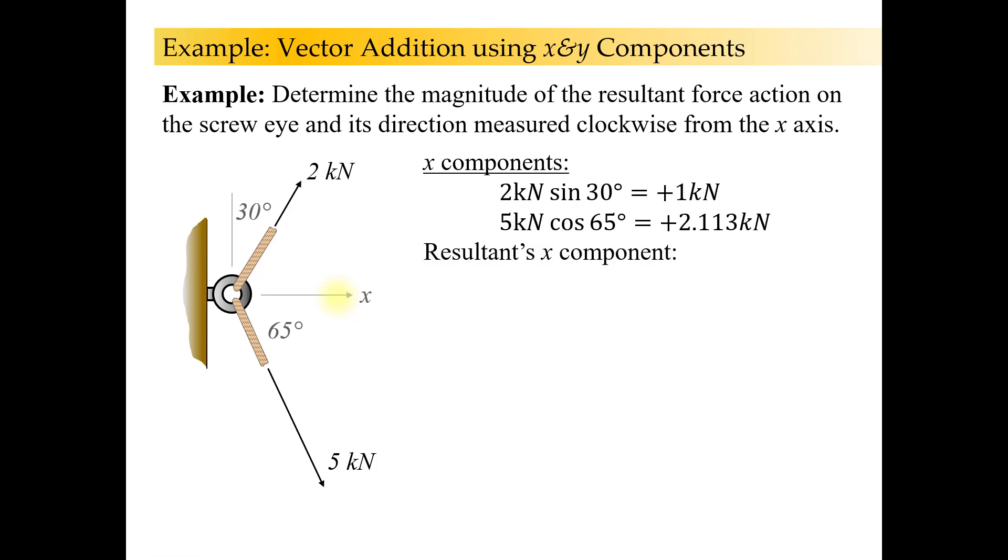Now let's look at the resultant's x component. The resultant's x component is just the summation of these two forces x components. So I just add these two numbers together, right? Because those two components are both pointing in the same direction. I can add them. And I get 3.113 kilonewtons. That's the x component of the resultant.